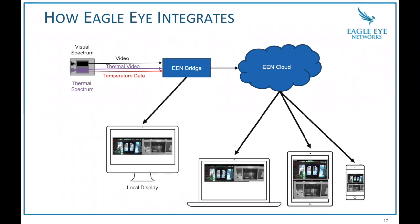All that data comes to our bridge. The local display connects to the bridge — you can plug an HDMI cable or display port into the bridge and configure what screens are shown. In this example, we're showing both the thermal spectrum and the visual spectrum, but you can choose to show either or both. Then the bridge sends all the data to the cloud, and from the cloud it gets to your laptop, iPad, iPhone, or Android device. We could also connect to third-party systems from here through our API.